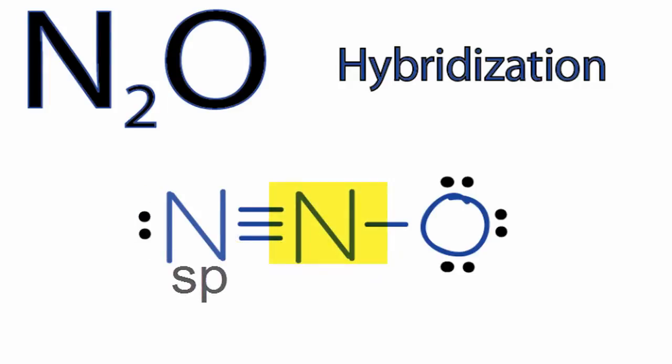For the nitrogen in the center, we have the sigma bond again and the two pi bonds, and we also have a sigma bond between the nitrogen and oxygen. So we have two sigma bonds. We have our S and P, which gives us SP hybridization on that central nitrogen.